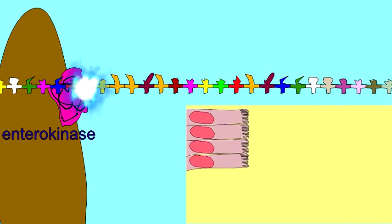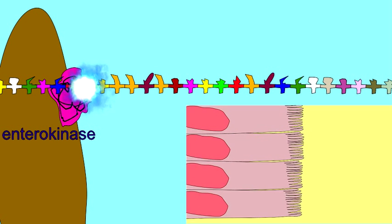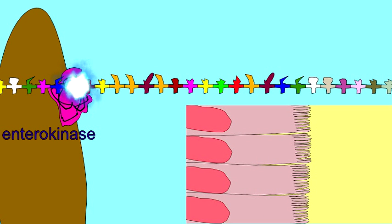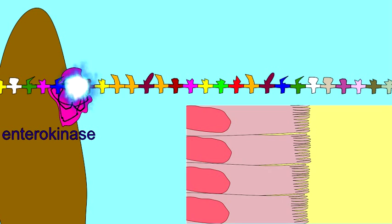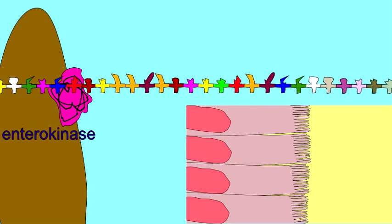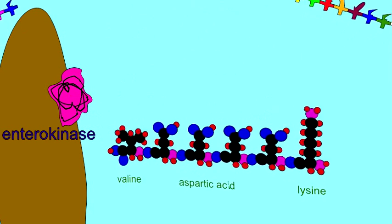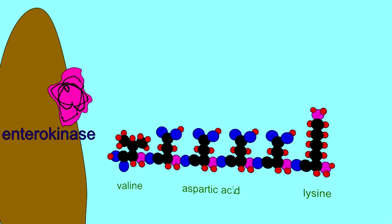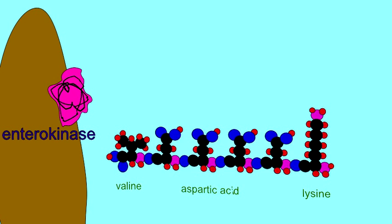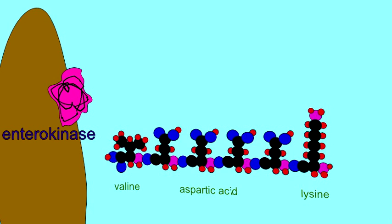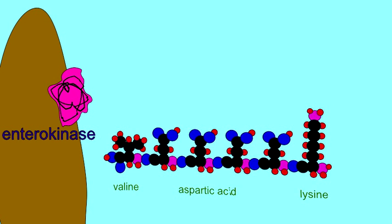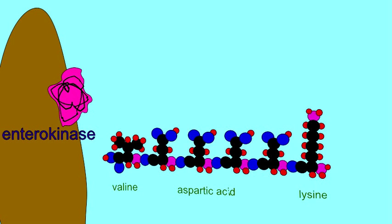These are members of the serine protease family, and they cleave peptide bonds at a specific sequence in which four aspartic acids or aspartates are joined to a lysine. Where such a sequence exists, enterokinase will break the peptide chain.